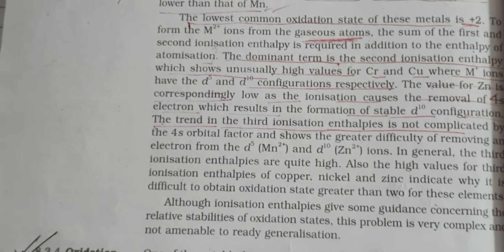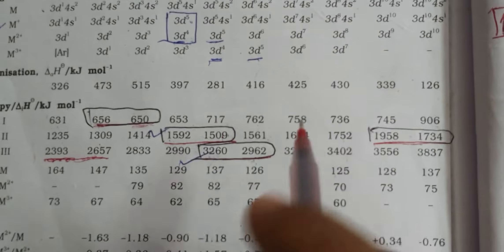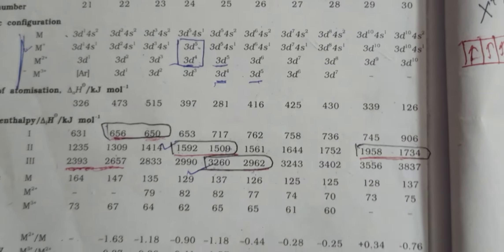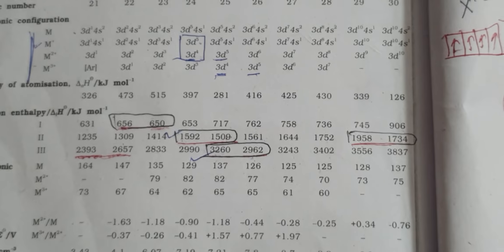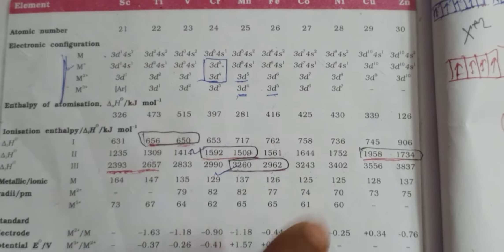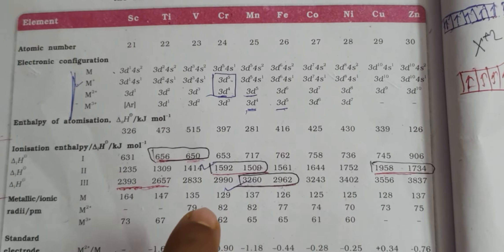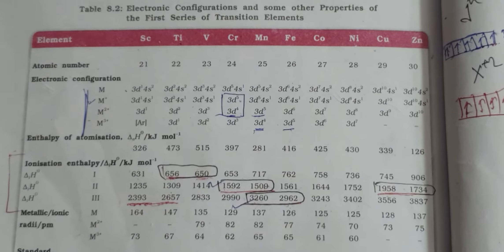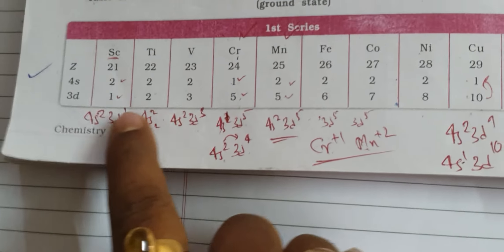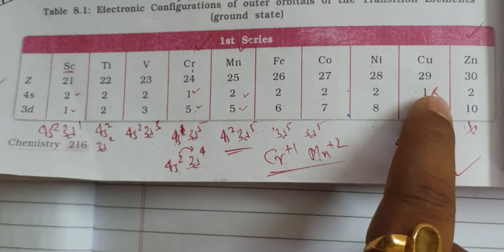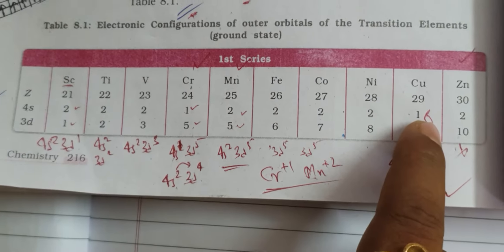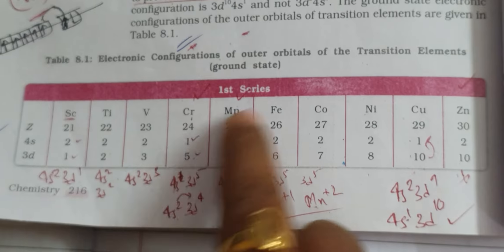For zinc, the second ionization enthalpy is low because you are taking the 4s electron, so there is no difficulty. But when you do the third ionization, you have to remove an electron from d. Chromium and copper have a 4s¹ configuration in the first series. So in the first ionization enthalpy for these, the electron removed is from 4s¹.